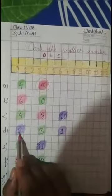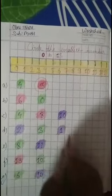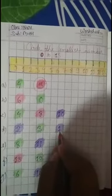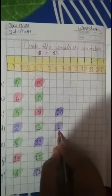And next line mein dekhen ga — 2 hai, 3 aur 1 hai. Tino mein sa sab se pahle kaun sa number aata hai? 1 aata hai. 1 ke baad 2 aur 3 aata hai. So 1 is the smallest number. So isko circle karna hai.